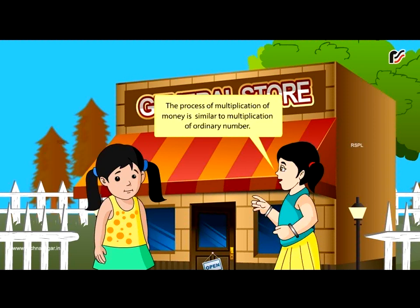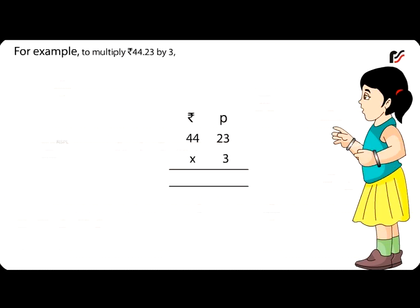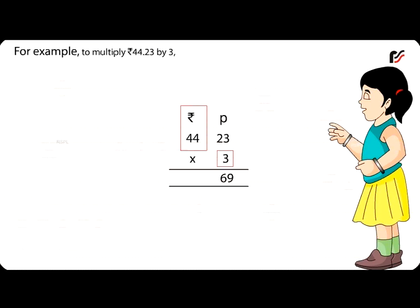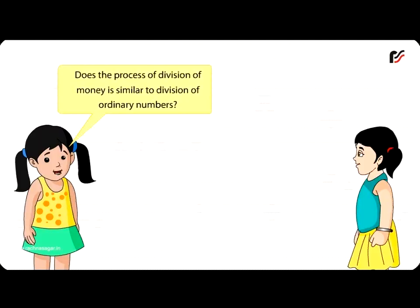The process of multiplication of money is similar to multiplication of ordinary numbers. For example, to multiply ₹44.23 by 3: multiply the amount in the paise column first by 3, then multiply the amount in the rupees column by 3. Thus the product is ₹132.69.